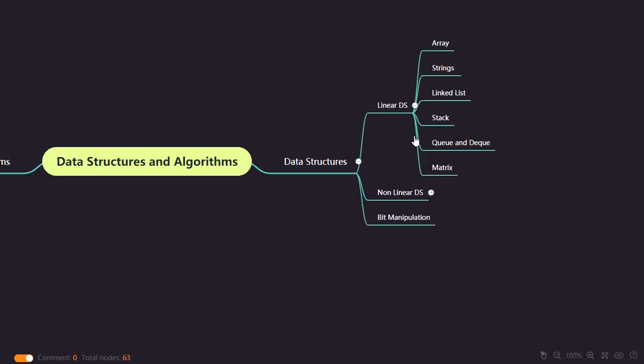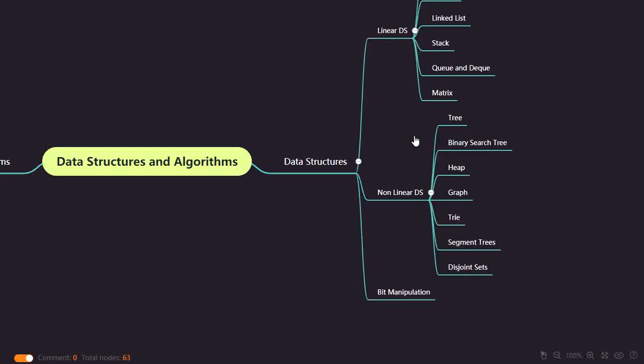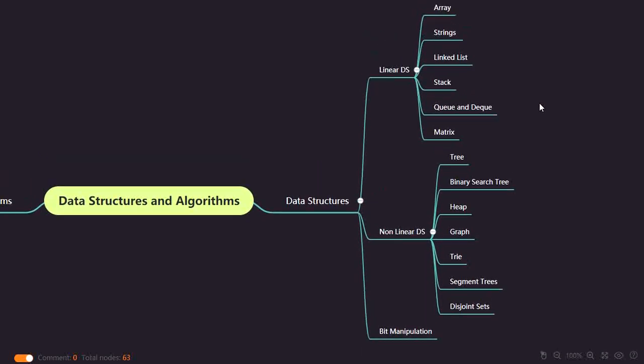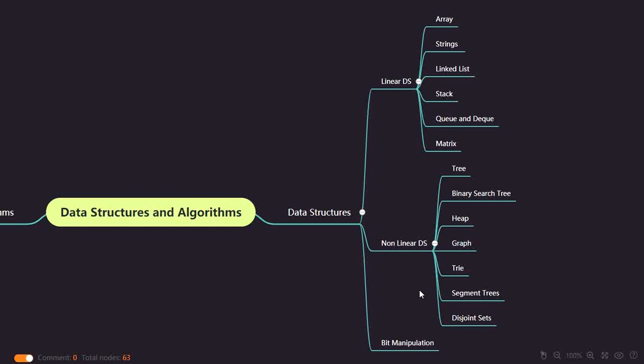In linear data structures, we have arrays, strings, linked list, stack, deck, queue, deque, and matrix. We will be discussing everything in Python — we don't have arrays per se, but we have lists. When we talk about nonlinear data structures, we have trees, binary search trees, heap, graph, segment trees, and disjoint sets. These are all the things you should know when you complete your data structures.